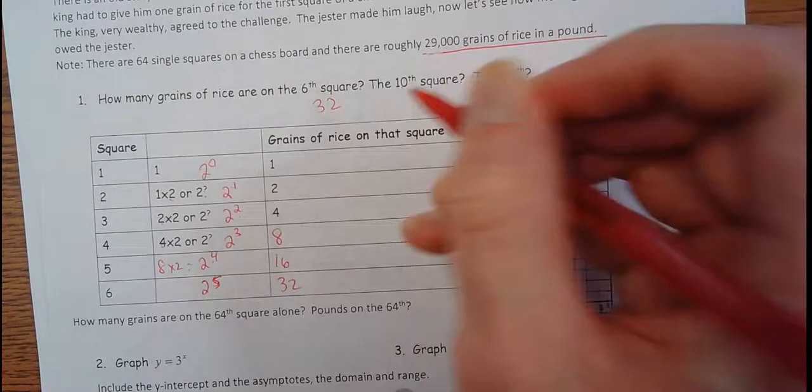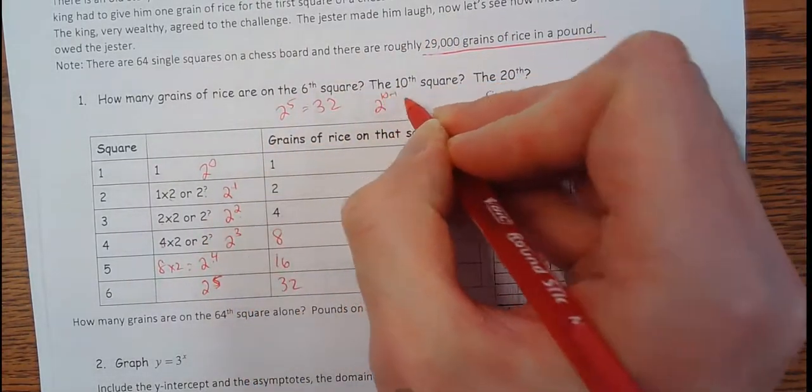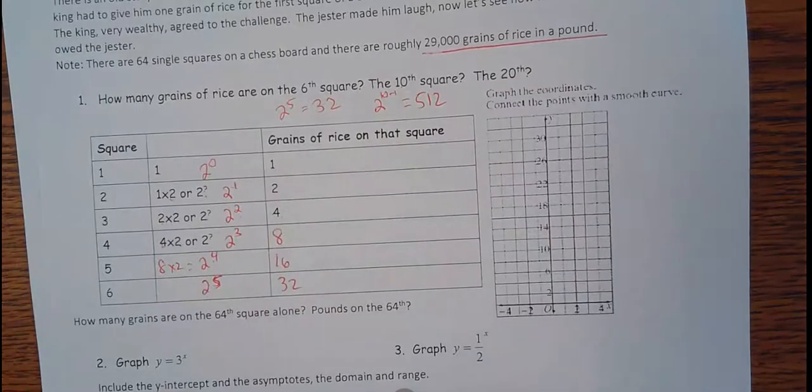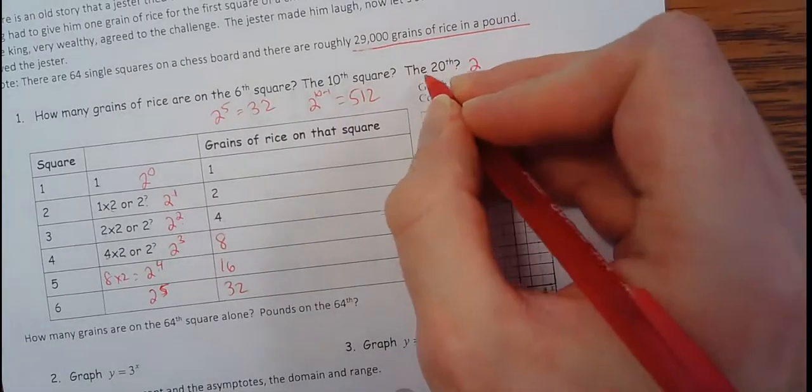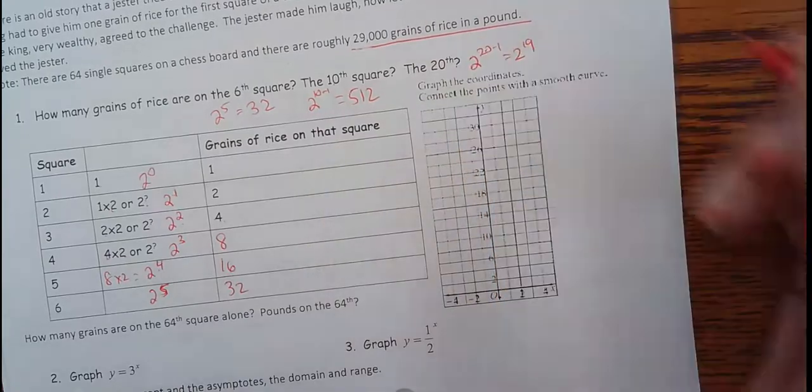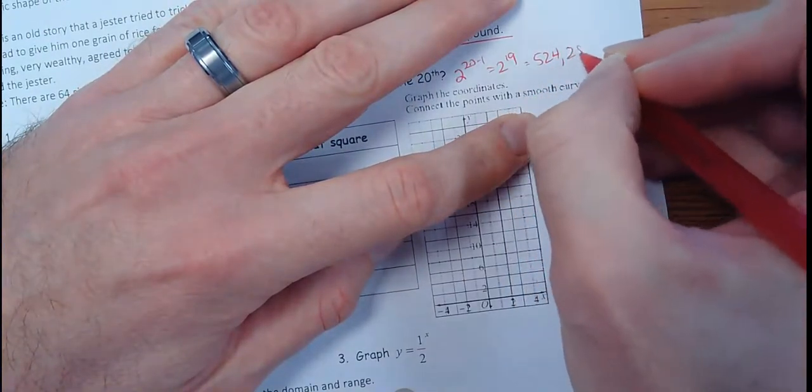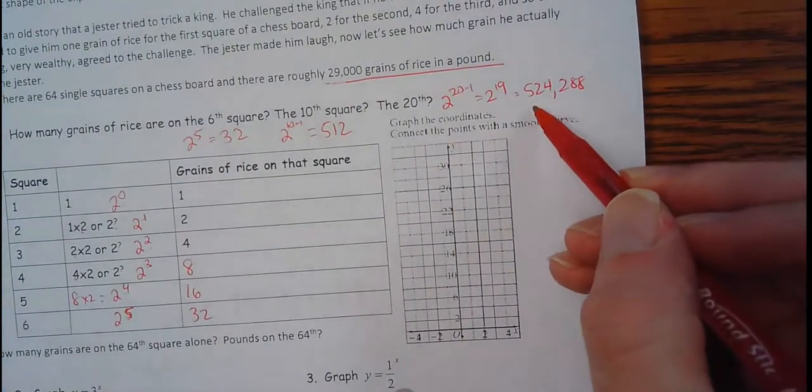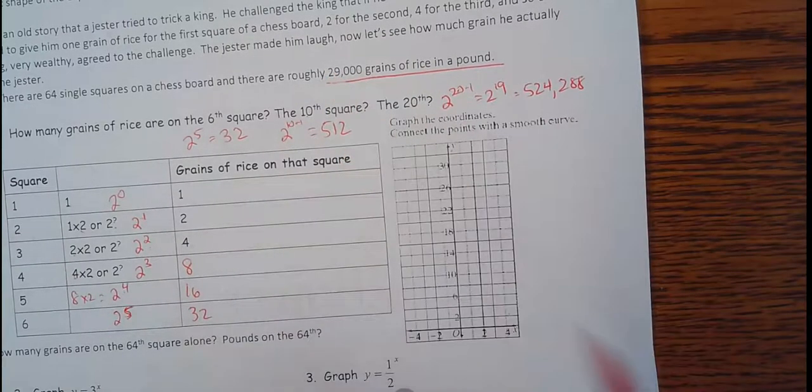How many would the tenth square have? Remember, this was two to the fifth. This is going to be two to the 10 minus one. Now, two to the 10 minus one is two to the ninth is 512. That's not too bad. I bet that king has that much rice. The 20th square would be 20 minus one, so two to the 19th, which is 524,288. That's a lot of rice.